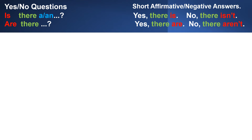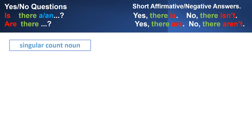To make yes-no questions, we put the verb to be first. So the affirmative statement there is becomes the yes-no question is there. The affirmative statement there are becomes the yes-no question are there.